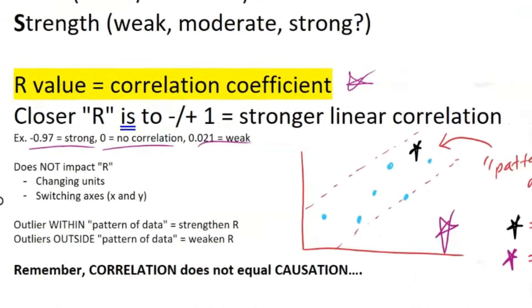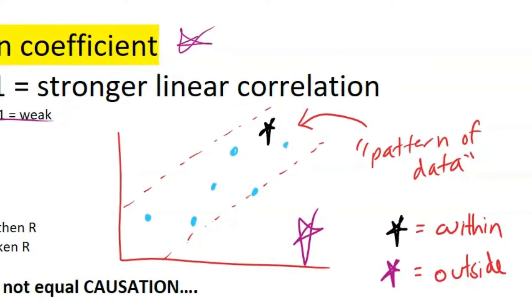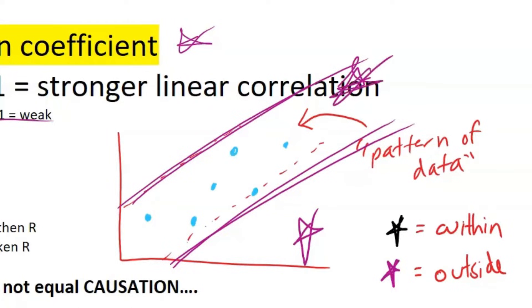Now let's talk about how outliers affect your R value. So any outliers that are within the pattern of data will strengthen R. Any outliers outside the pattern of data will weaken R. What is the pattern of data? Well, I drew a nice diagram to represent it. It's basically the general trend that your points are facing. So if I had a super outlier like this star I'm drawing out here, that would be within the pattern of data and strengthen R. But if we had something down here, that's outside the pattern of data, that would weaken R.